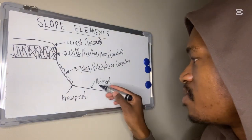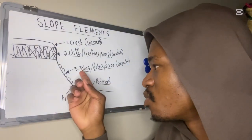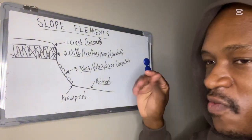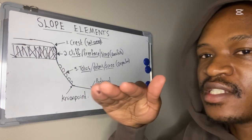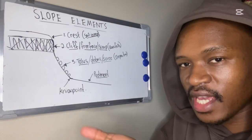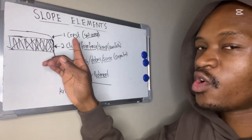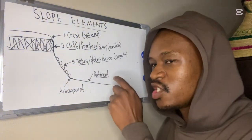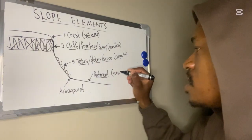Lastly, we have the pediment. The pediment is a very gentle slope at the bottom. Fine sediments from the talus slope accumulate at the pediment. The pediment is slightly concave — it curves inwards slightly. Remember, the crest is convex, but the pediment is slightly concave. The main geomorphological process at the pediment is erosion by running water.